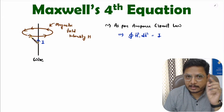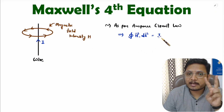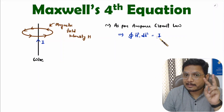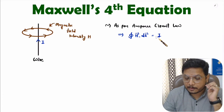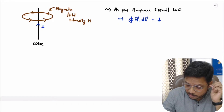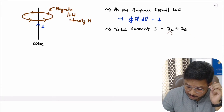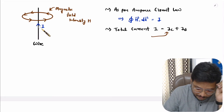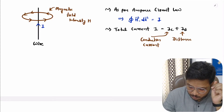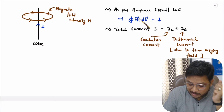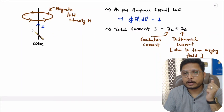In a time-varying field, this total current has two components: one is the conduction component and the second is the displacement component. The displacement component is present due to the time-varying field. So this current I has two different components.